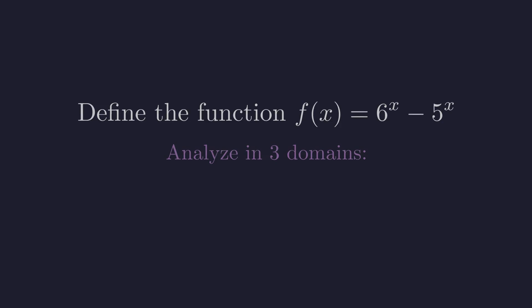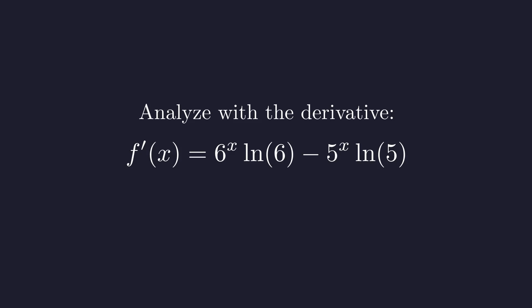Let's start with the case where x is positive. The key insight is to figure out whether this function is increasing or decreasing when x is positive, and the most reliable way to determine this is by looking at the derivative. Using the standard rule for differentiating exponential functions, we get f prime of x equals 6 to the x times the natural logarithm of 6 minus 5 to the x times the natural logarithm of 5.